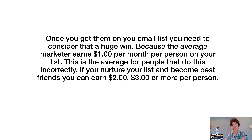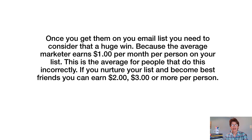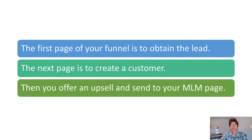With three income streams you should make around $3 per person per month from your list. Each month you're growing that list. So if you want an income of $100,000 a month, grow your email list to 100,000 people. Even if you're doing a bad job at marketing, you should still make $100,000 a month with that many people on your list.